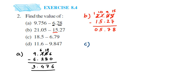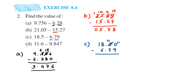The next question is 18.5 minus 6.79. Place the decimal — on the left side we have 6, write 6 here. On the right side we have 79, so write 7 and 9. There's a blank space beside 5, so write down 0 to avoid confusion. Now 0 minus 9 — we cannot do it, so we take a borrow from 5; 5 becomes 4 and this becomes 10. 10 minus 9 is 1.